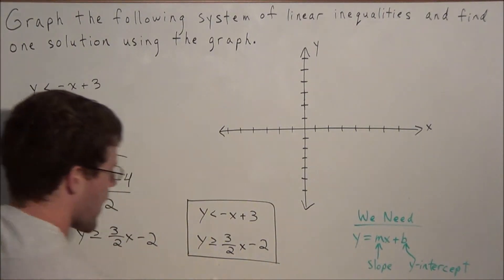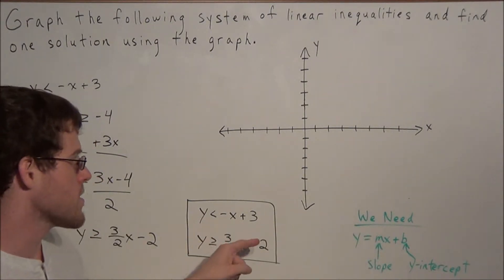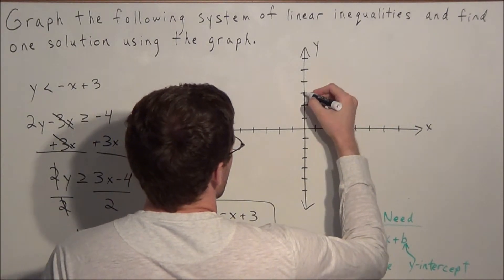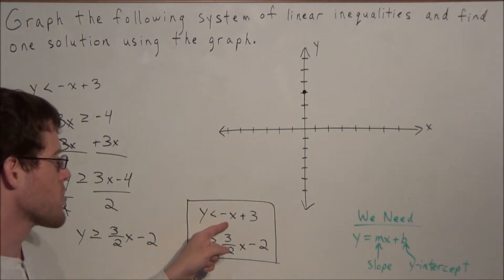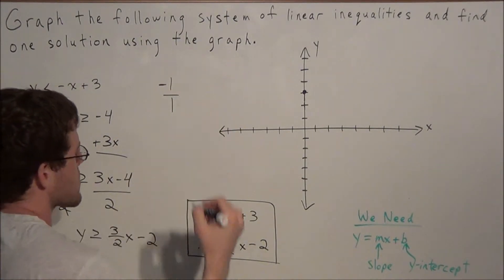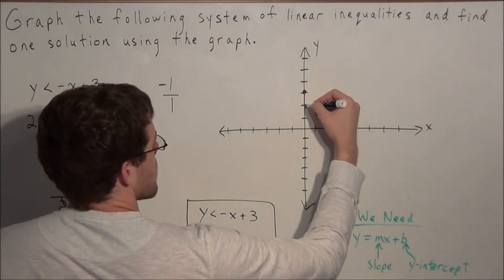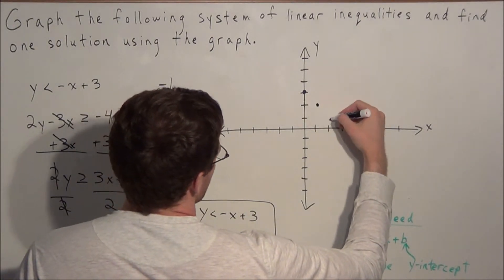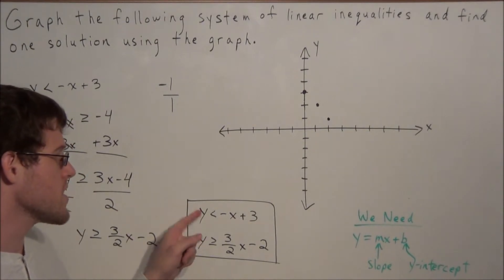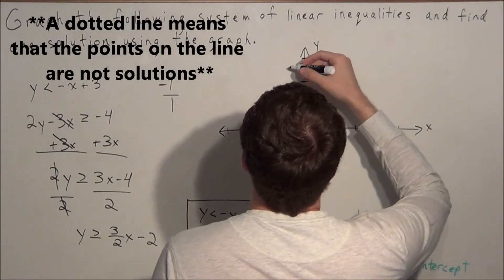Now we need to graph this modified system. The first inequality has a y-intercept of positive 3, so this line hits the y-axis at positive 3. We go up 1, 2, 3 and plot this point. The slope of this first line is negative 1, written as negative 1 over 1. Using slope as rise over run, we go down 1 and to the right 1, then repeat: down 1 to the right 1. Since y is strictly less than negative x plus 3, we draw a dotted line connecting these points.